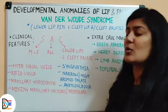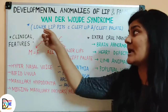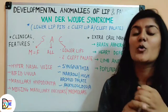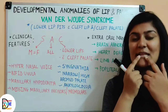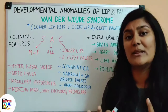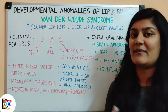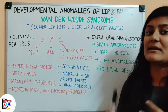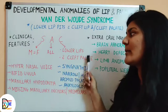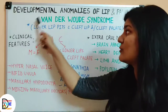The common finding is that the lower lip is involved — these are lower lip pits, not upper lip pits. There is also a stronger association with cleft palate compared to cleft lip. So the hallmark combination remains: lower lip pits associated more commonly with cleft palate.